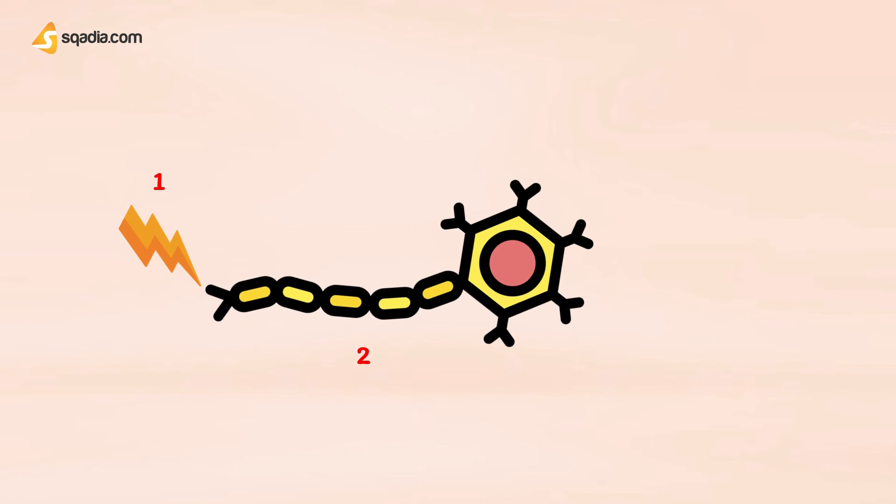In first step, a sensation begins when a receptor detects a stimulus. In second step, if the stimulus is strong enough, the receptor causes a sensory neuron to send an impulse to the brain and spinal cord.